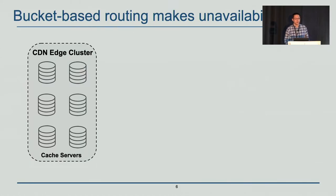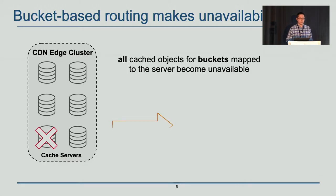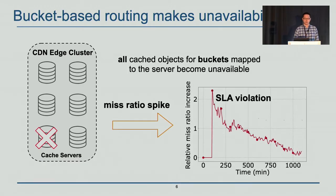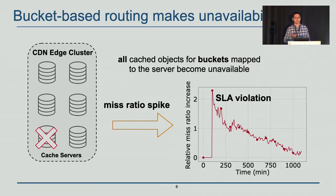This coarse-grained load balancing makes the unavailability problem worse. If a server becomes unavailable, then all cached objects for buckets that map to this server become unavailable, causing a miss ratio spike. This miss ratio spike will cause poor user experience and sometimes violate SLA.